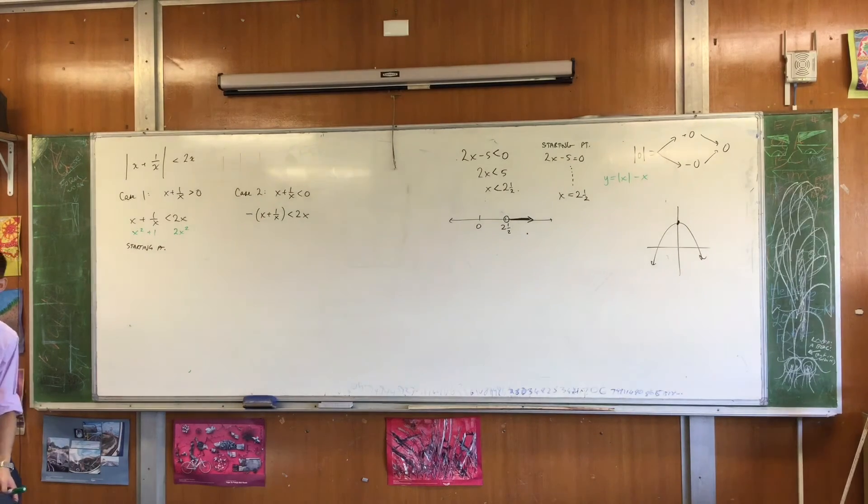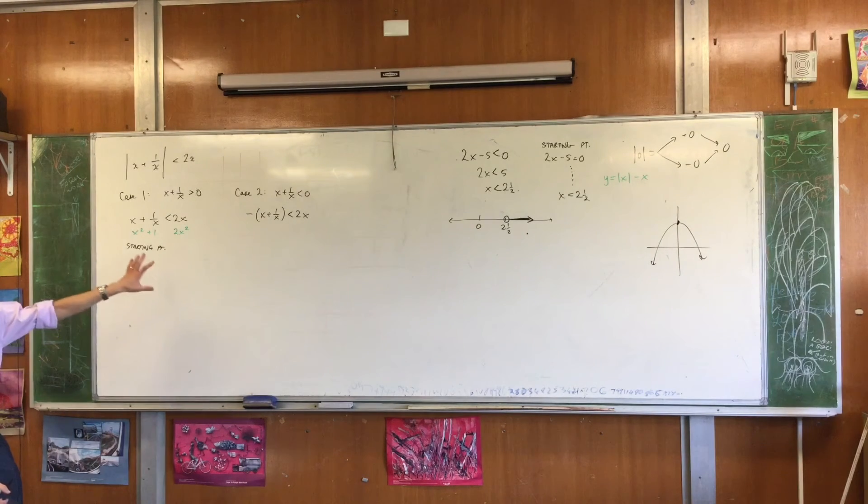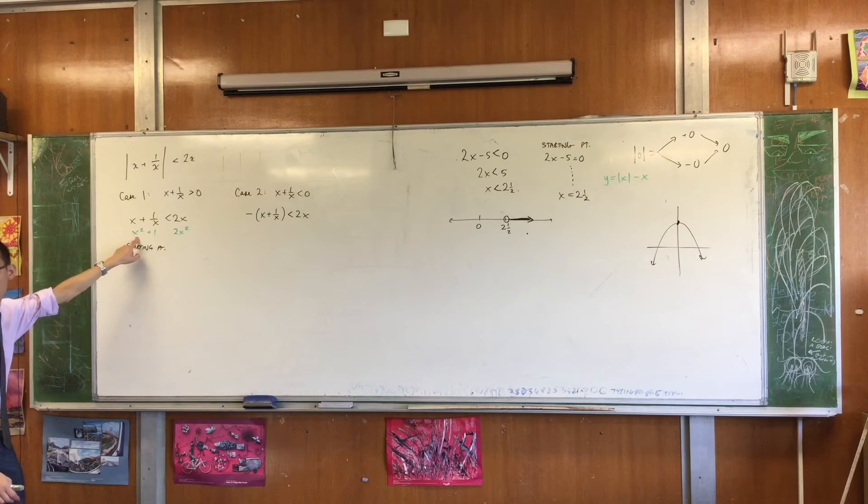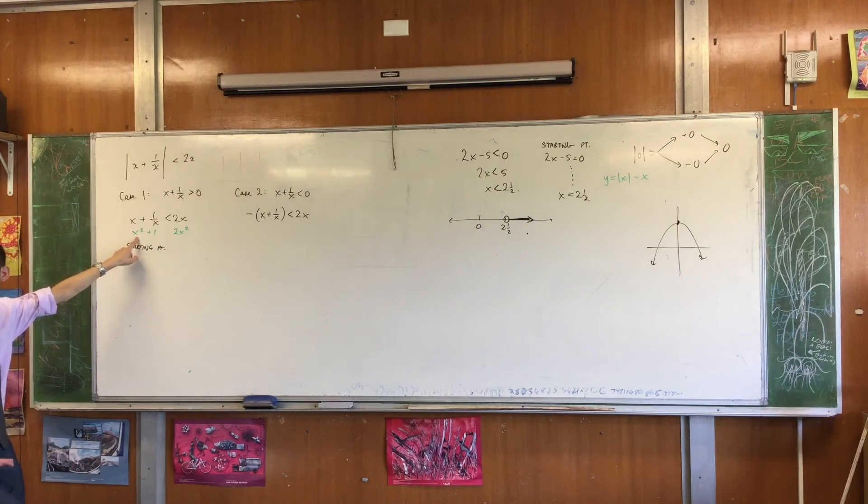But now I'm in a bit of a dilemma. Because when you're dealing with inequalities, you don't know if x is positive or negative. Correct. When you multiply by a number, the inequality's direction can change depending on what the number is. So if x is negative, the inequality will change. And if x is positive, the inequality will not change. But I don't know what it is, right?